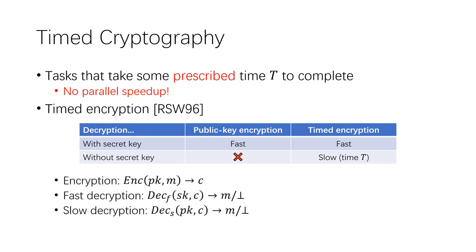To be a bit more formal: the encryption algorithm takes as input the public key and a message, and outputs a ciphertext — same as public key encryption. But for decryption there are two algorithms. The fast decryption algorithm takes the secret key and the ciphertext and outputs a message or reject. The slow decryption algorithm only takes the public key and the ciphertext, outputs a message or reject, and this slow decryption should take the prescribed time T.